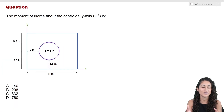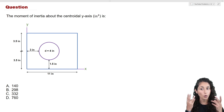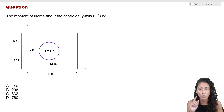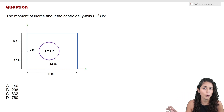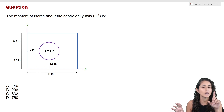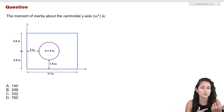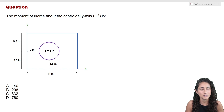We are given this shape and we want to find the moment of inertia about the centroidal y-axis. We already found the moment of inertia about the centroidal x-axis — if you haven't watched that video yet, I'll leave the link above. We're going to use the same exact steps for this problem; the only difference is that instead of the x-axis, we're now using the y-axis. Give this problem a try and I'll see you in a little bit.